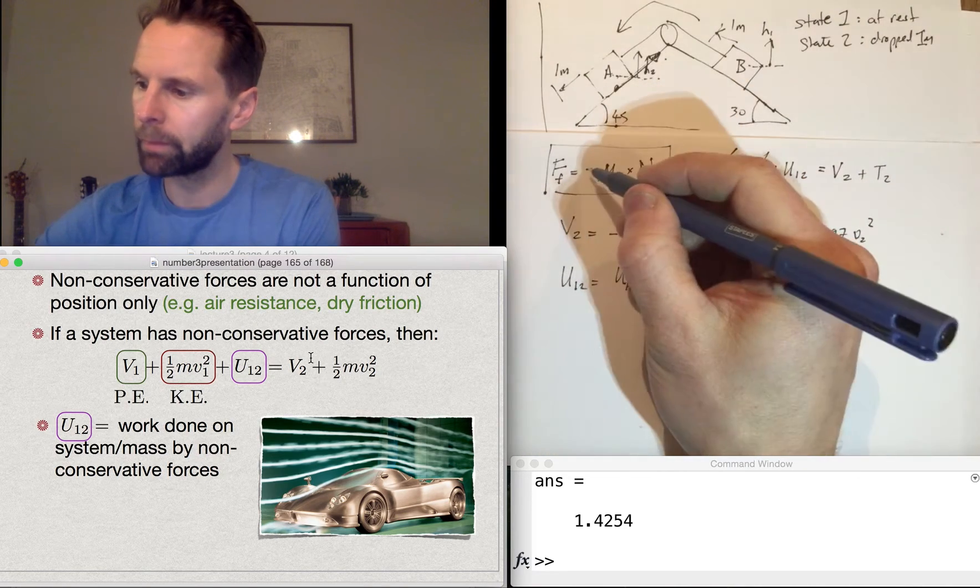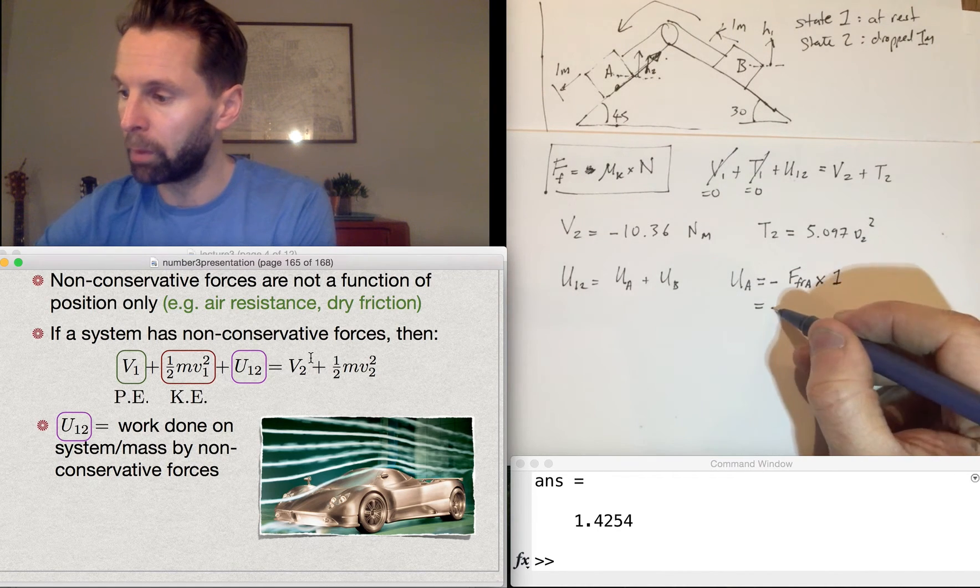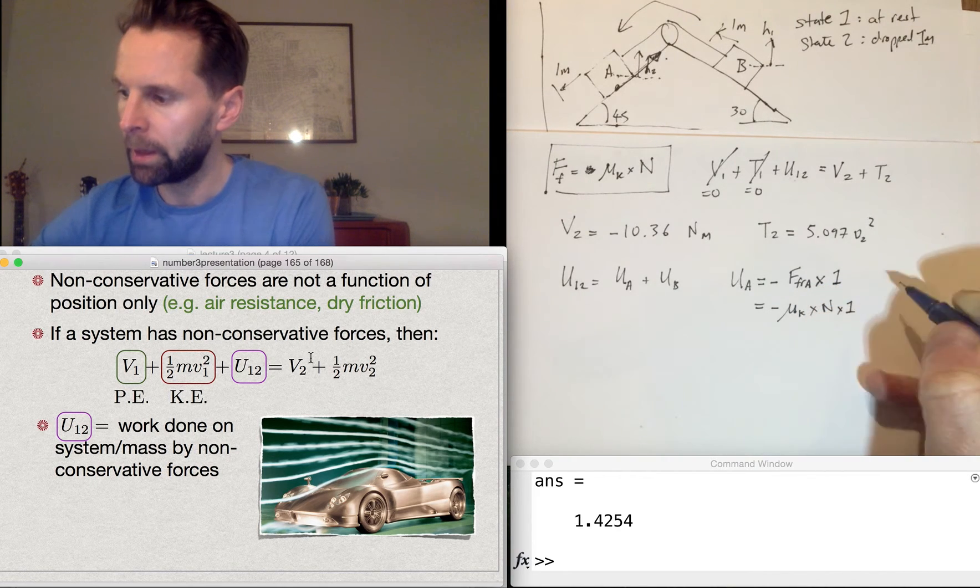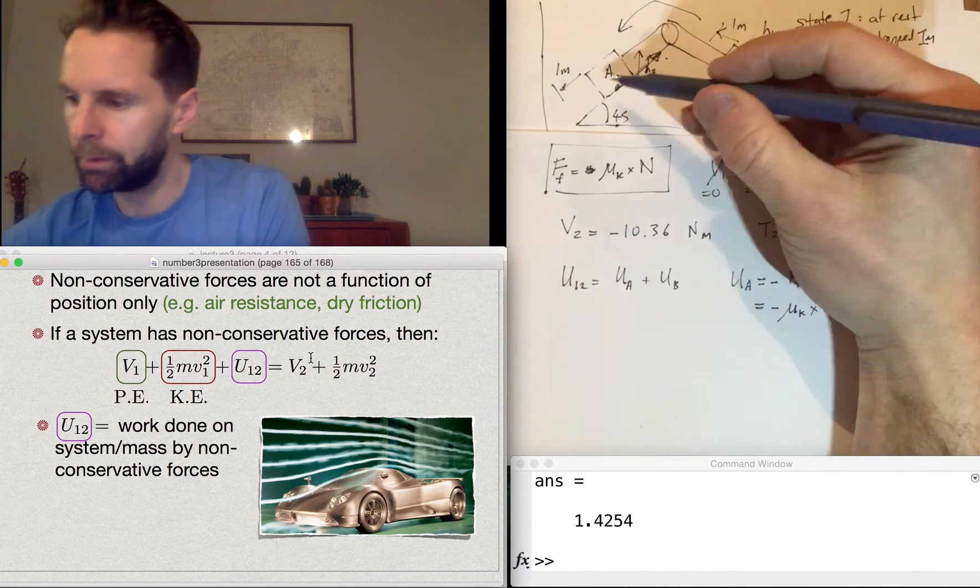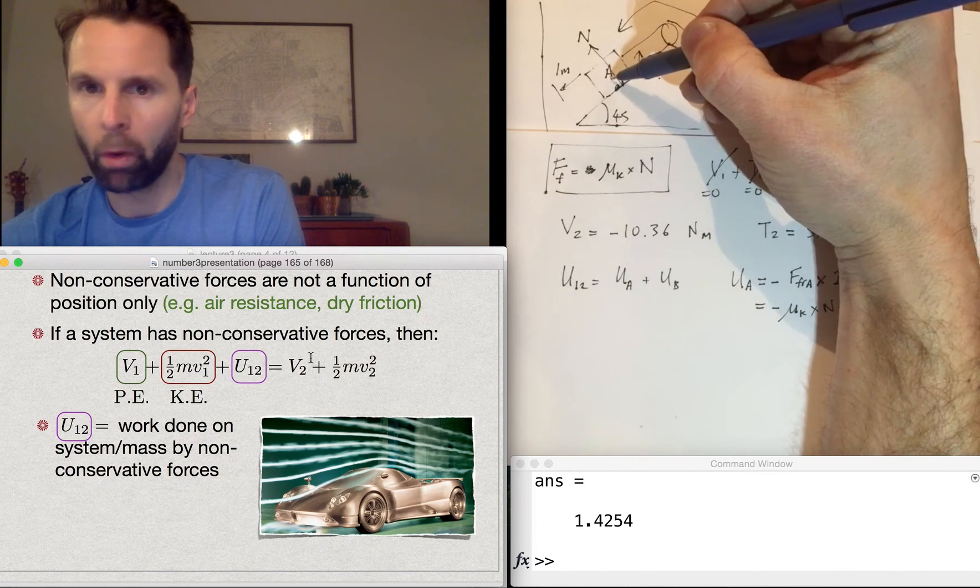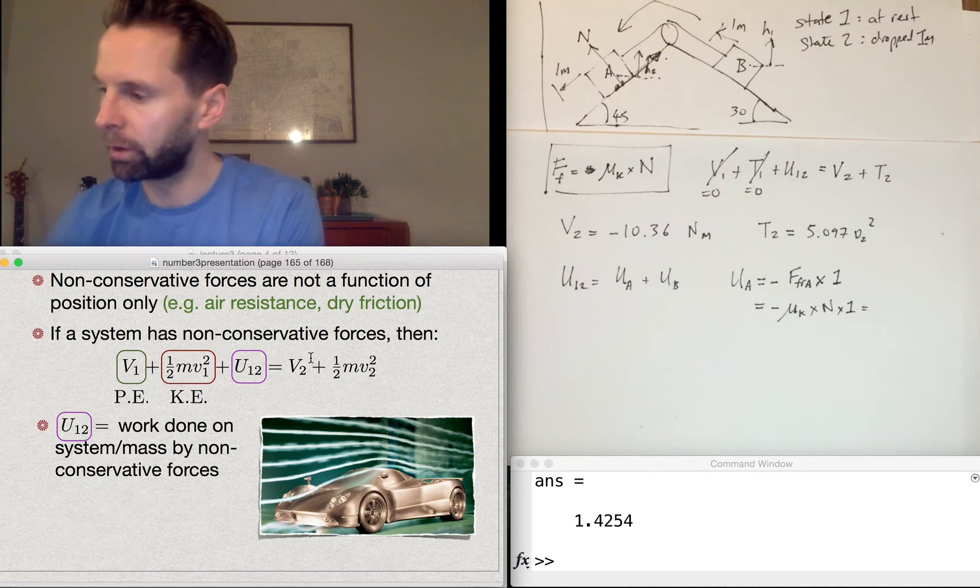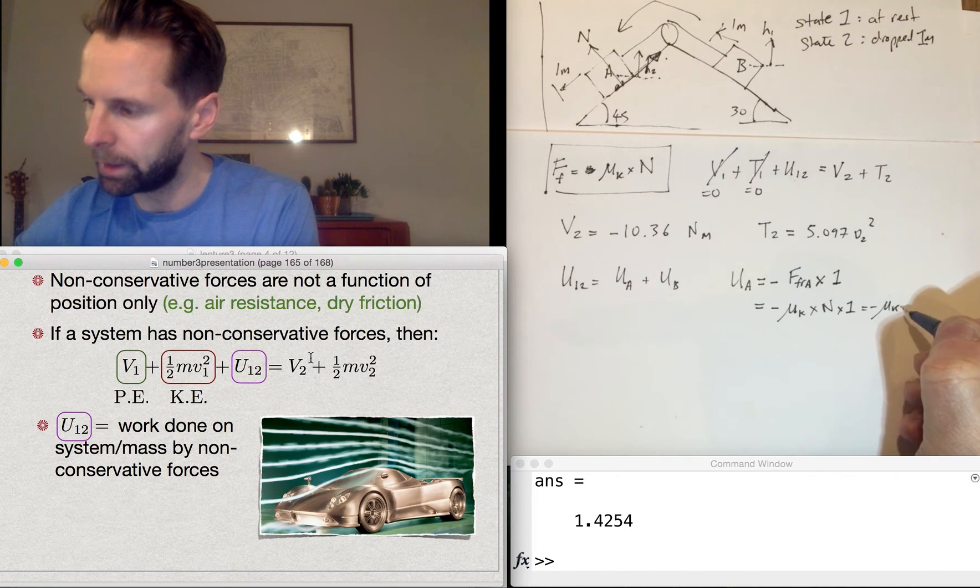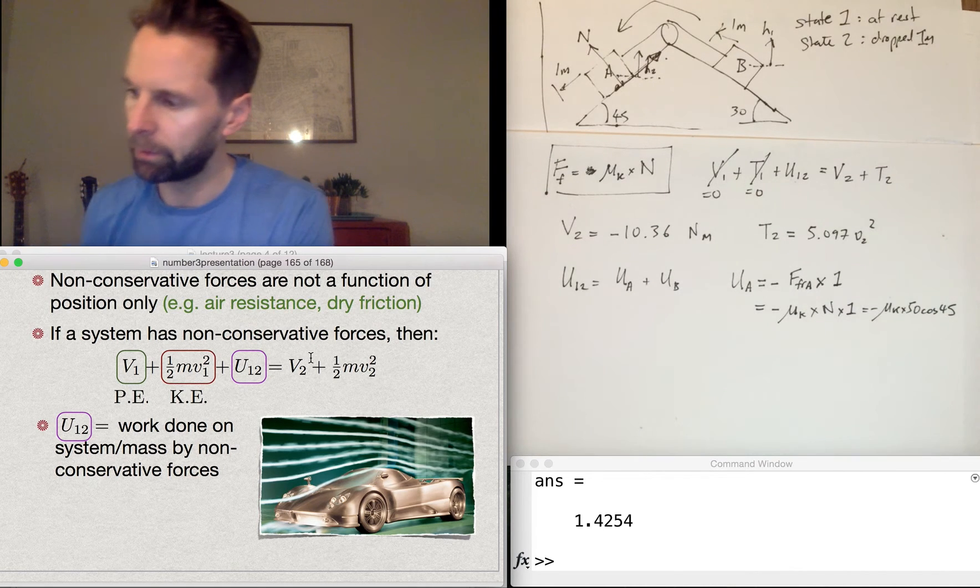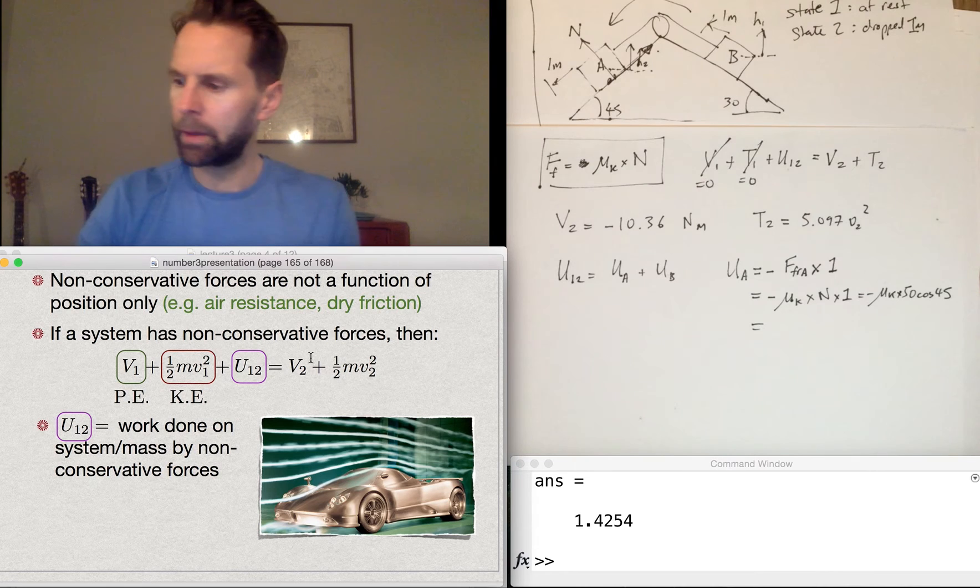It's force times distance with a negative sign indicating that it's removing energy from the system, so it's traveled one meter along in this direction. So that's frictional force times one. The frictional force using this expression, I shouldn't have put the negative sign already in there, it should equal minus mu K times the normal reaction times one.